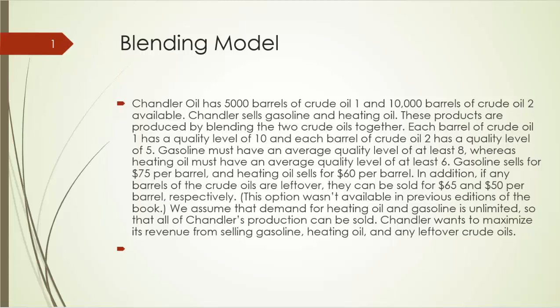Gasoline sells for $75 per barrel and heating oil sells for $60 per barrel. In addition, if any barrels of the crude oils are leftover, they can be sold for $65 and $50 per barrel respectively. We assume that demand for heating oil and gasoline is unlimited so that all of Chandler's production can be sold. Chandler wants to maximize its revenue from selling gasoline, heating oil, and any leftover crude oils.